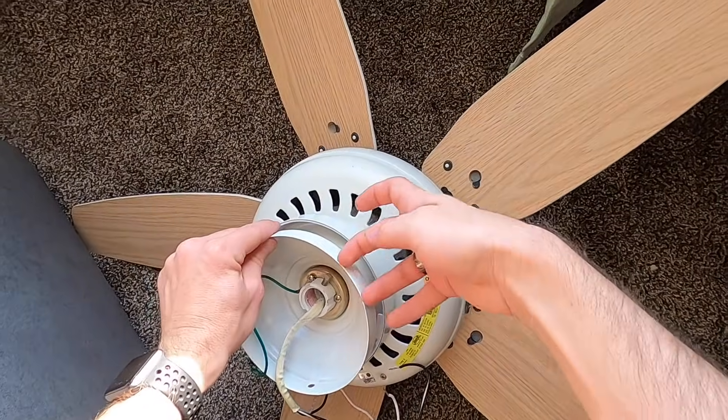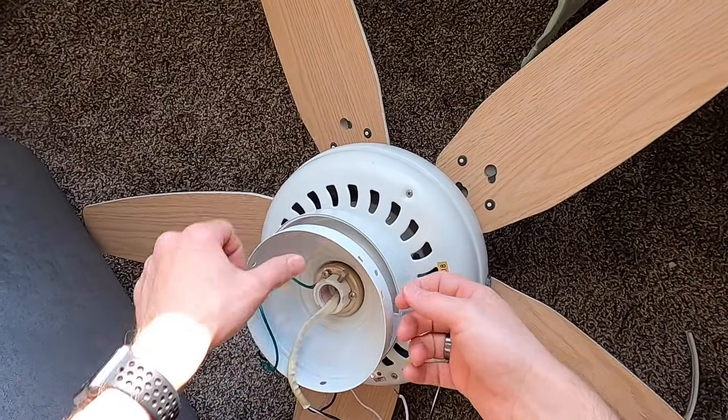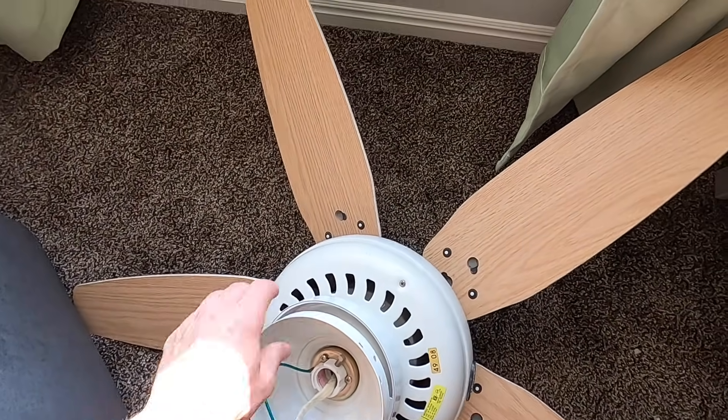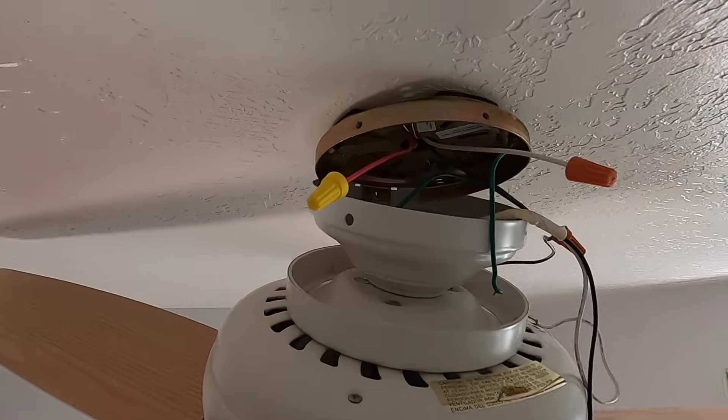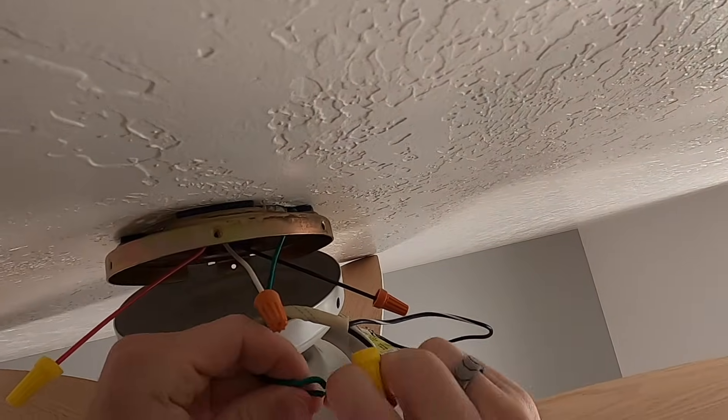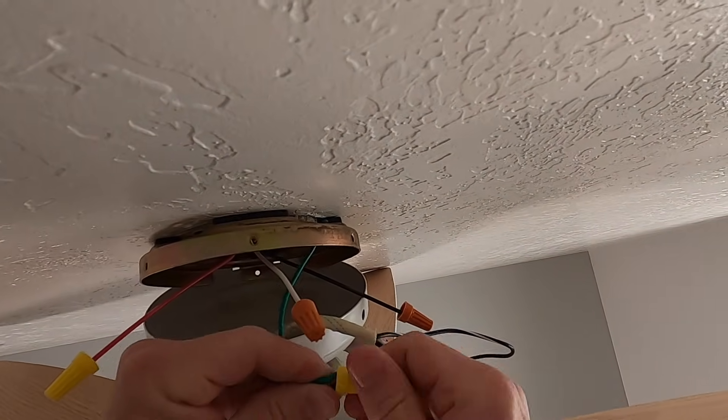So this fan particularly has these two notches in the mounting bracket to where I can hang it up while I do the wiring. So now that it's hanging securely, I can connect the wiring. First, I want to connect the ground. The green to the green to the copper.